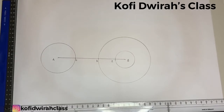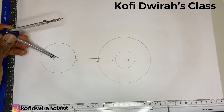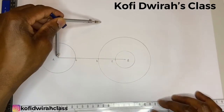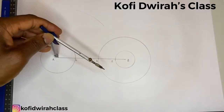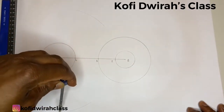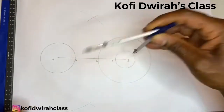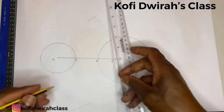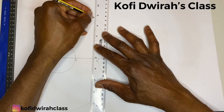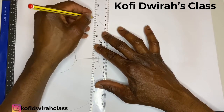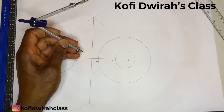Then you bisect line AB. At point A you draw your arc, and at point B you draw another arc. Then you draw a straight line to get the center of line AB, and you draw a straight line — that is the center.